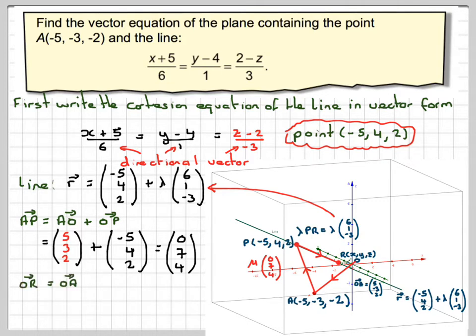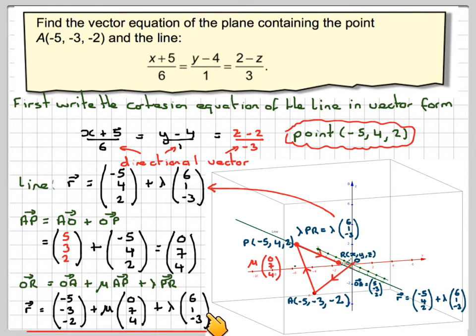Now, the vector equation of the line is going to be OR. O to R is going to be OA plus some multiple of this vector here, mu AP, plus some multiple of this vector here, lambda 6, 1, minus 3, or lambda PR. So that's going to be R will be minus 5, minus 3, 2 plus mu times 0, 7, 4 plus lambda times 6, 1, minus 3.